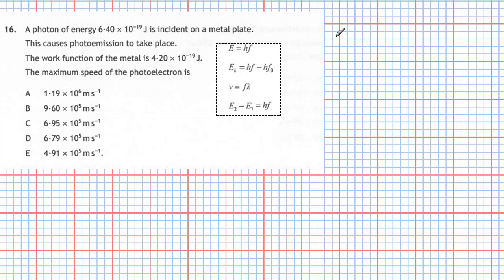So we put down Ek. Ek is equal to the energy of the photon hf, which we know, take away hf0, which is the work function of the metal. So putting the numbers in, we have Ek is going to equal to hf, which is 6.40 times 10 to minus 19 joules, take away the work function, which is 4.20 times 10 to minus 19 joules. So if we do that subtraction, we get the kinetic energy to be 2.20 times 10 to minus 19 joules.